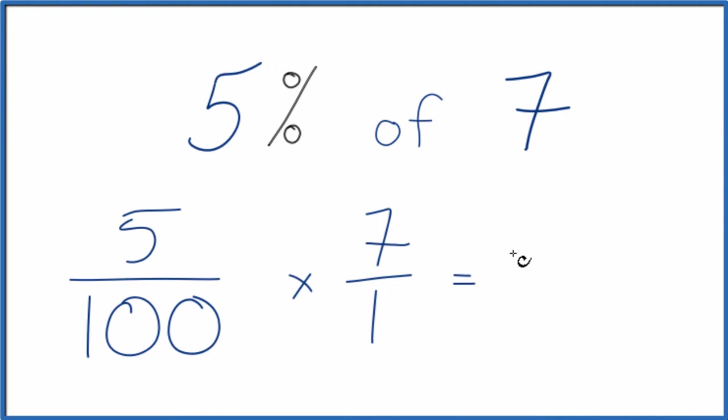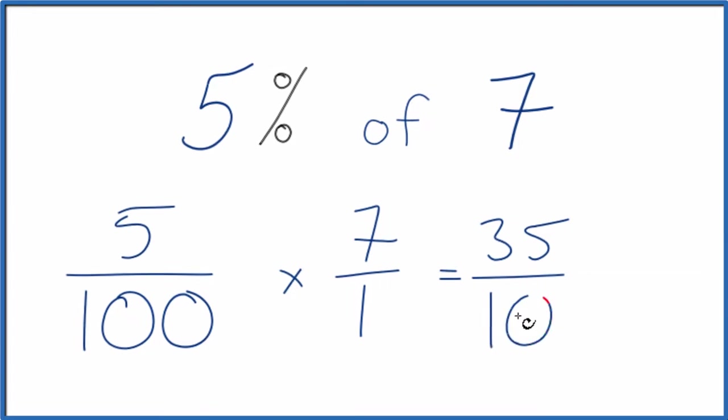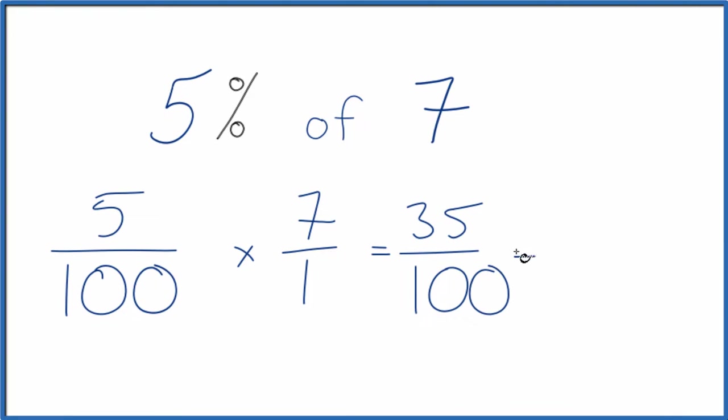5 times 7, that's 35. 100 times 1 is 100, and if you divide 35 by 100, you get 0.35.